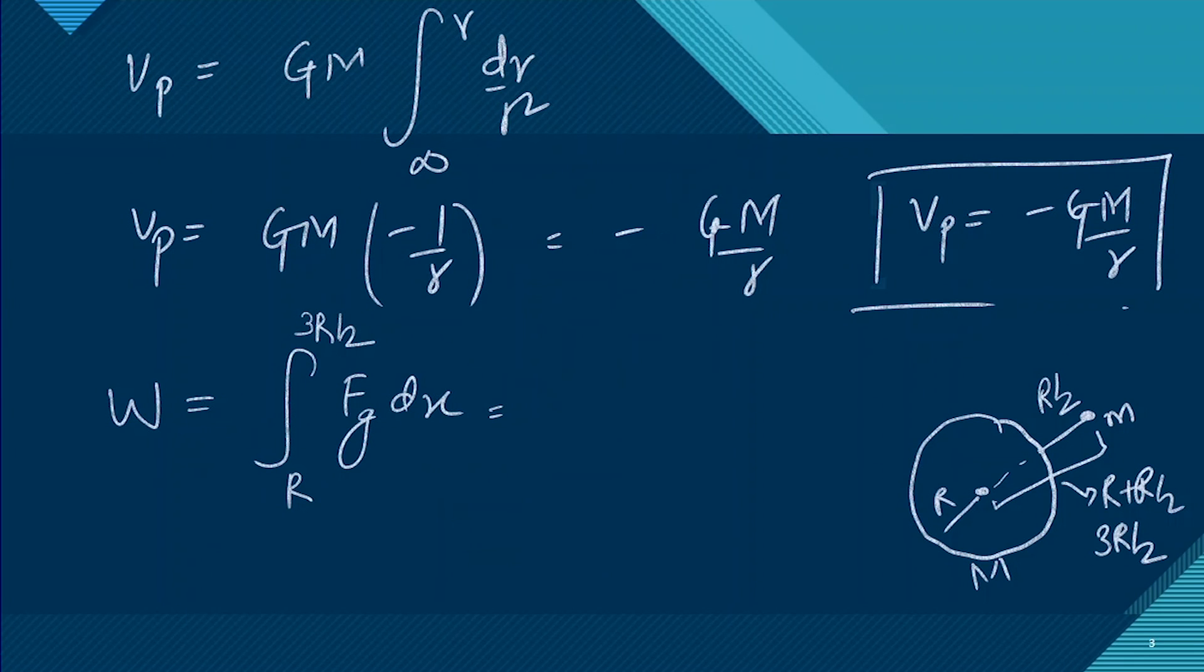So we will put the expression for the gravitational force between the two bodies, which will be minus GMm/x². This negative sign indicates it is attractive. x is the instantaneous distance. We have to integrate with respect to dx. These are the limits.